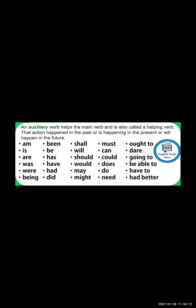We have examples of auxiliary verbs: am, is, are, was, were, being, be, has, have, had, did. These kinds of words are called helping verbs. Why are they called helping verbs? Because they help the main verb. When we have both the helping verb and the main verb, then we can make a proper sentence structure. And that proper sentence structure shows whether it's past, present, or future tense.